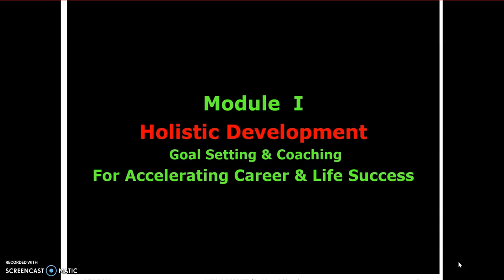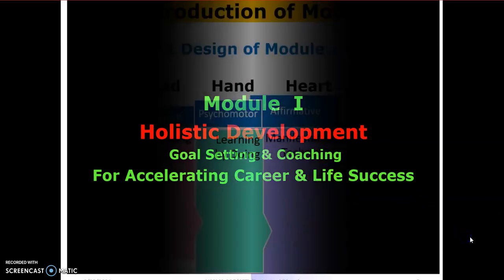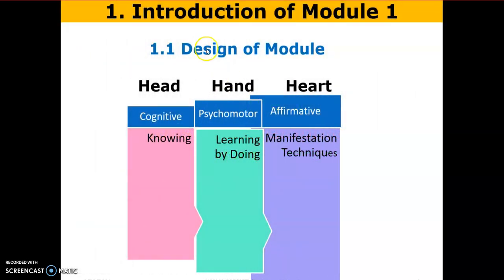You have gone through this browser. Module 1 is on goal setting and coaching for accelerating career and life success. Here we have to see our personal aspects, career, and life also. The design of this module is done in such a way that your head, hand, and heart will all be involved. Because when head, hand, and heart — all three H's — are involved in the learning process, the learning outcome enhances.